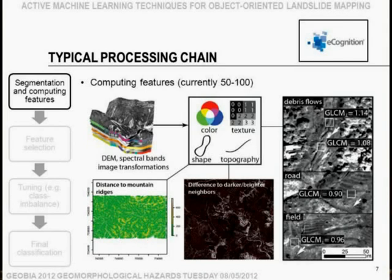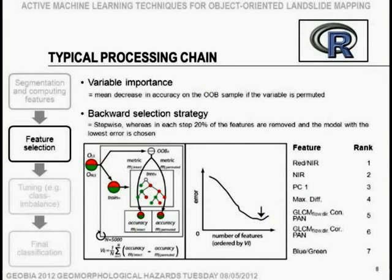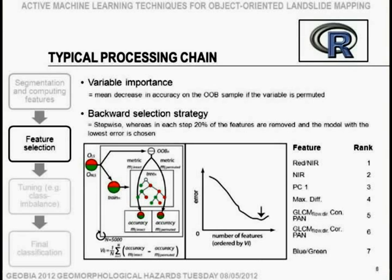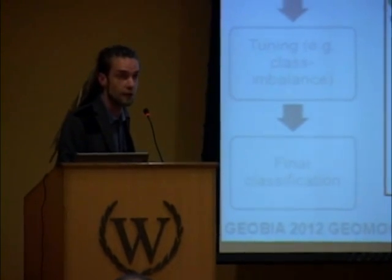Once you have your sample, you can use the random forest algorithm to do feature selection. A small out-of-bag portion of the sample is sent through each individual classification tree twice: once with all features intact, and once with one feature randomly permuted. You observe the difference in accuracy — since you know the class membership from your training data — and get an estimate of how important the permuted feature is for correct classification. You rank all features by their importance and do a stepwise backward selection, choosing the model with the lowest error rate. That gives you the set of features to use.